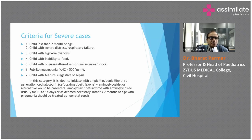In severe pneumonia, it is ideal to initiate treatment with ampicillin, penicillin, or third-generation cephalosporins such as cefotaxime and ceftriaxone, plus aminoglycosides. An alternative would be parenteral amoxicillin-clavulanate or cefuroxime with aminoglycosides, usually for 10 to 14 days as deemed necessary. Infants less than 2 months of age with pneumonia should be treated as neonatal sepsis.